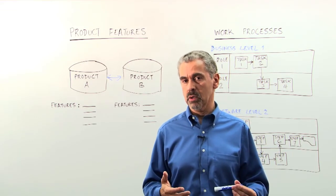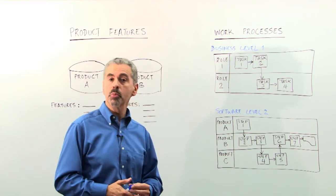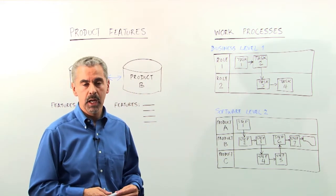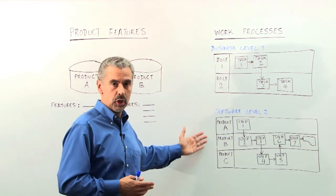So a much better method of explaining software capabilities is by looking at it from a work process point of view. Now if we look at it this way, we have two different levels that we can look at.